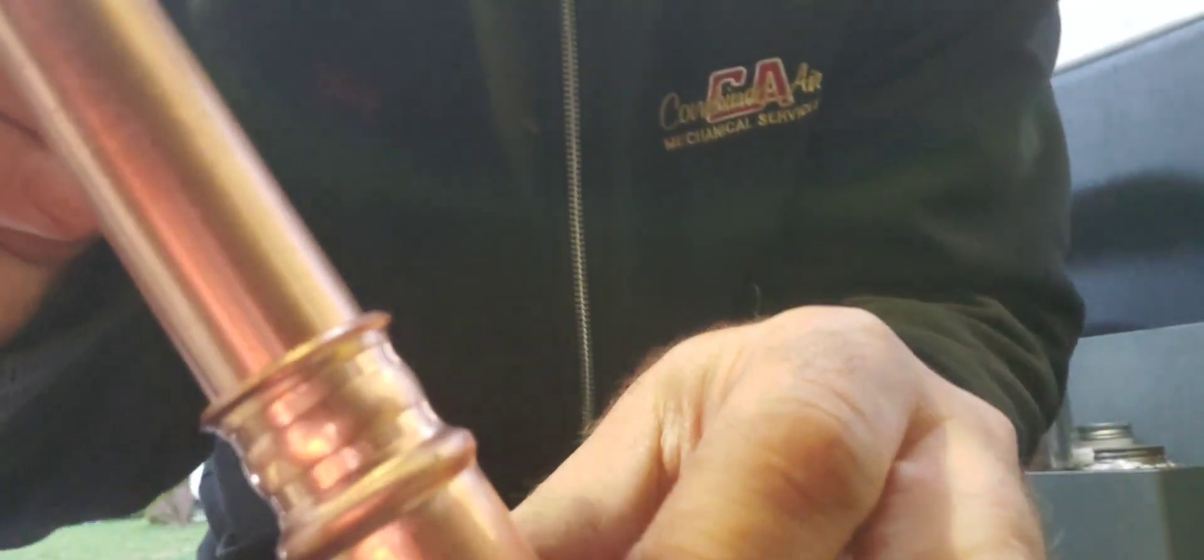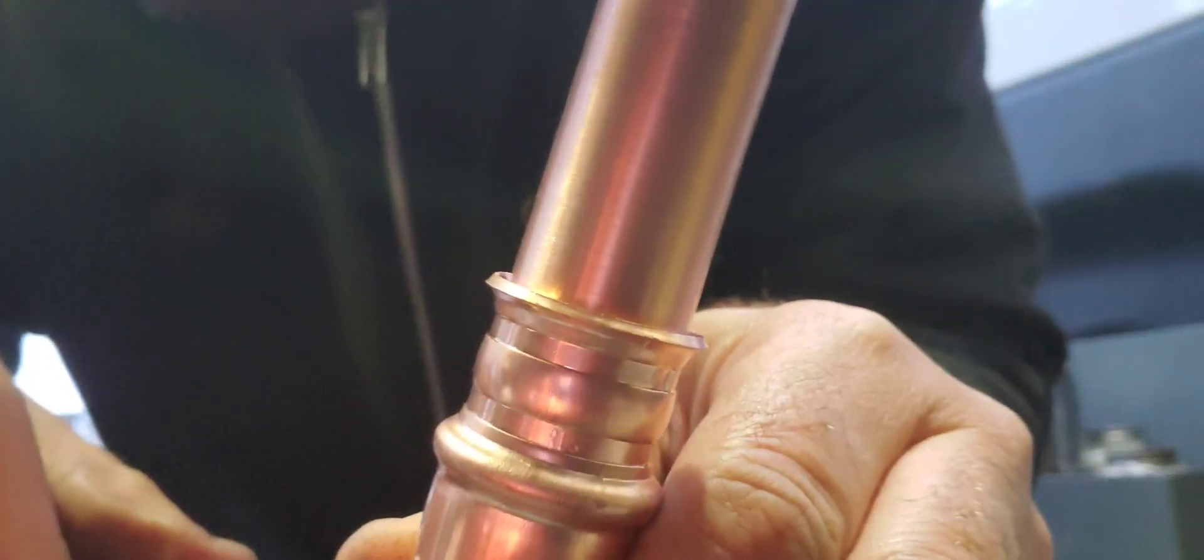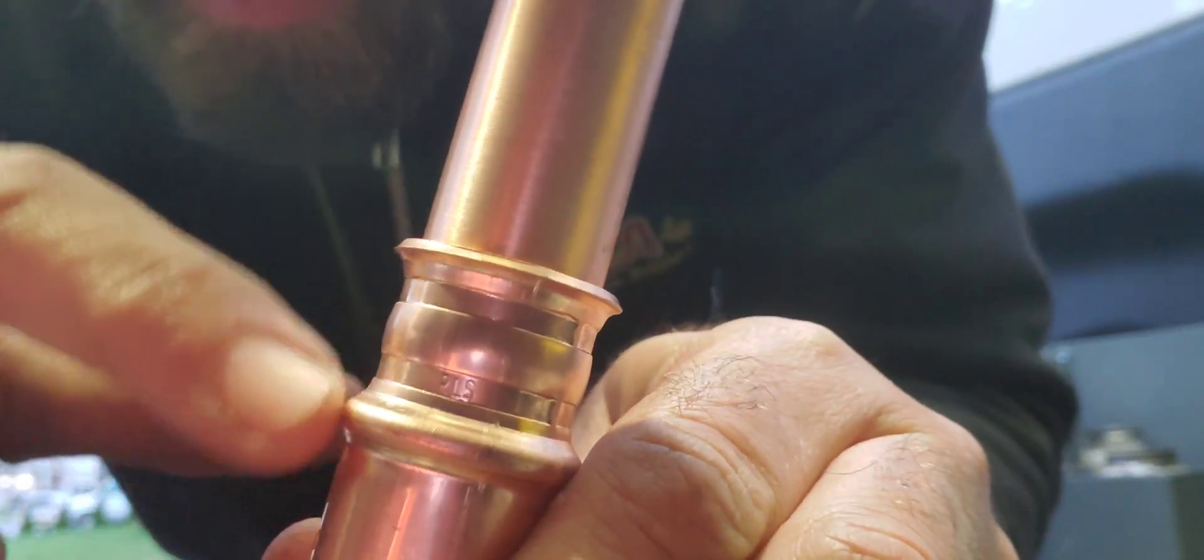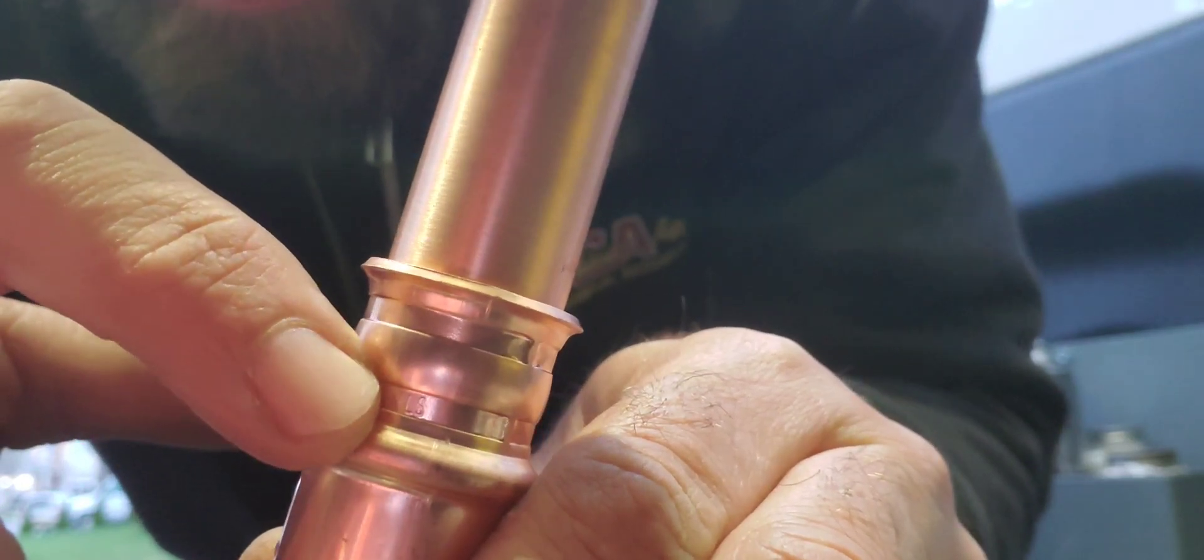One important thing you've got to look for here is the RLS stamp right there. That lets you know that it's properly pressed. Pretty cool. So next we use the crimp gauge.